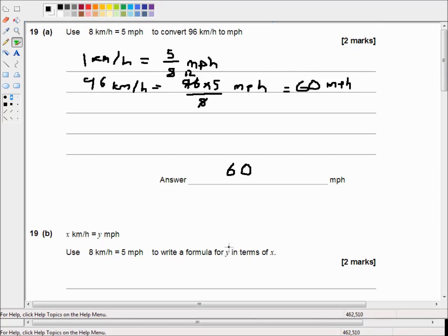Well we pretty much already have that here. We've got 1 kilometer per hour equals 5 over 8 miles per hour. So 5 over 8 times x, where x is in kilometers per hour, is equal to y. And that's just from up here.